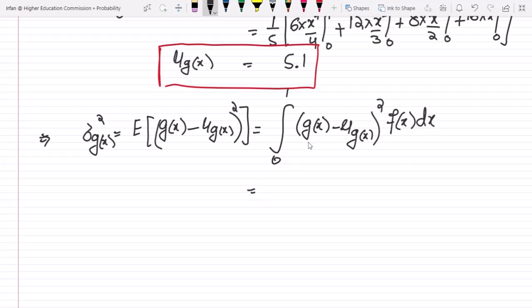Let me write their values. The value of g of x is 3x square plus 4 minus 5.1, whole square, and f of x is 2x plus 4 divided by 5 dx.